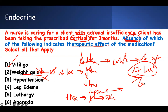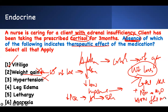Addison's patients don't have leg edema. It's when they have excess cortisol that they become Cushingoid — they will have sodium retention, water follows, and they can develop hypertension, fluid overload, and edema. Therefore, there is no absence of leg edema to observe, because an Addison's patient does not have leg edema.